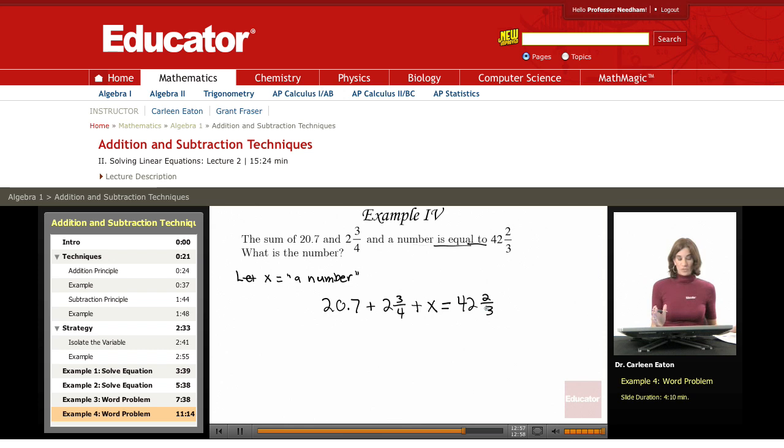Before I do anything else with these, I need to put the numbers in a form that is the same and a form that's easy to work with. So I'm going to switch these all into decimal form: 20.7 plus 2.75 plus x equals 42.67.